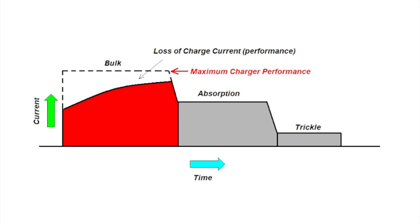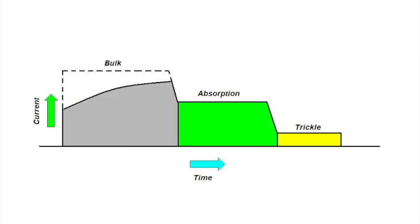Once the charge controller finally gets out of the bulk charge mode, the charge current drops, and then things go back to normal. The absorption charge and trickle charge are still the same, because then there's not as much voltage drop issue in those charge modes.